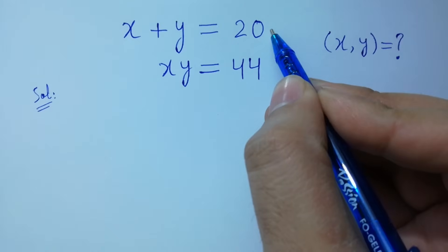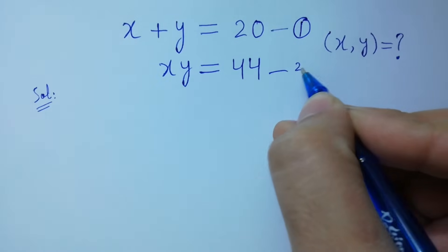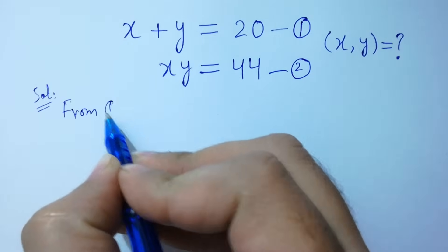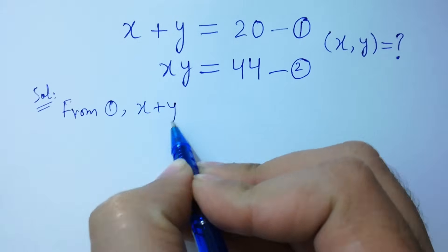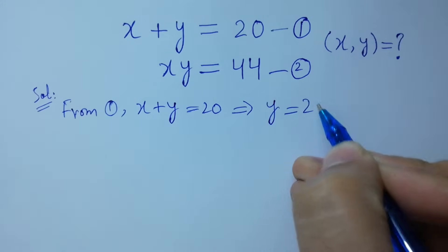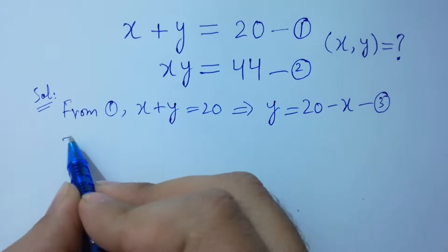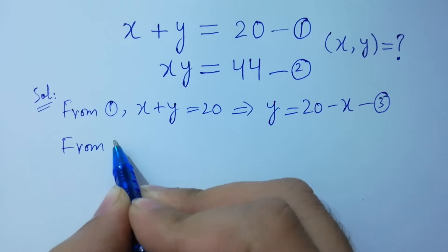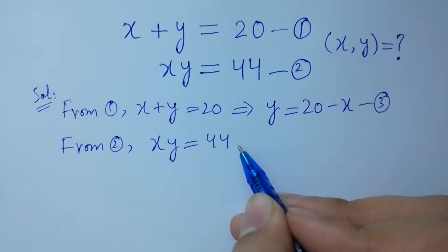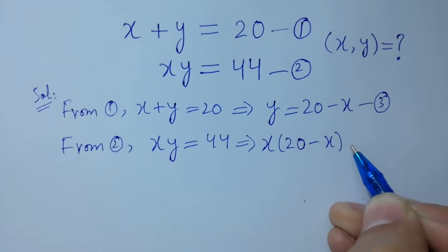Suppose x plus y equal to 20 is the first equation, and x times y equal to 44 is the second equation. From the first equation, x plus y equal to 20, then y equal to 20 minus x. Suppose this is the third equation. From the second equation, x times y equal to 44, put the value of y: x times (20 minus x) equal to 44.